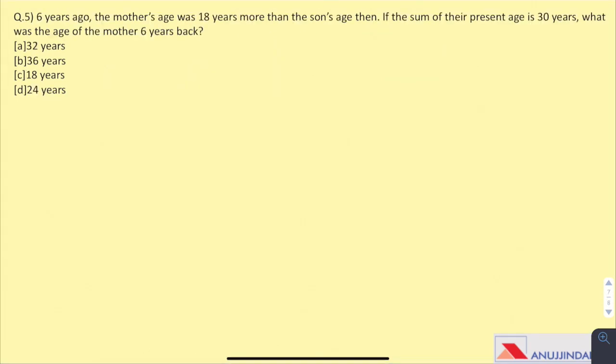Question 5. 6 years ago, the mother's age was 18 years more than the son's age then. If the sum of their present age is 30 years, what was the age of mother 6 years back? Let the present age of mother be M and son be S. Now, as per the question, 6 years ago, the age of mother was 18 years more than that of the son. This is equation 1. So, hence we get M equals S plus 18. And presently, the sum of their ages is 30.